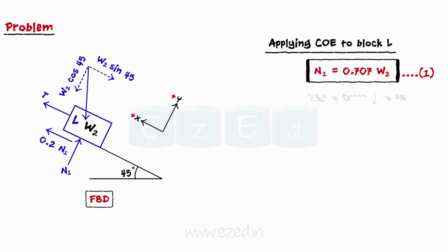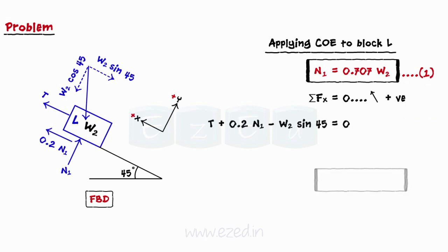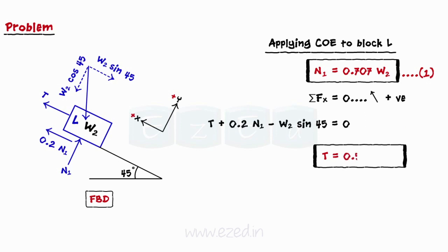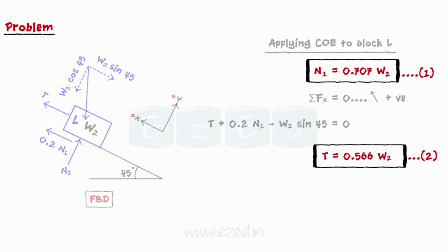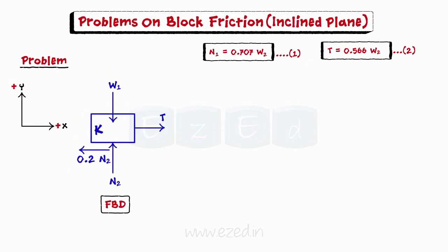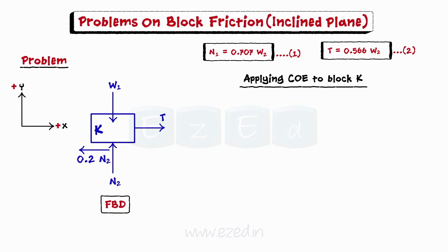Then we equate the summation of all forces in the x direction to 0, finding that the magnitude of tension in the rope T equals 0.566 times the weight of block L, that is W2. Next, we will analyze block K. Let us now apply conditions of equilibrium to block K. We will first equate the summation of all forces in the y direction to 0, finding a relation between the normal reaction N2 and the weight force W1.